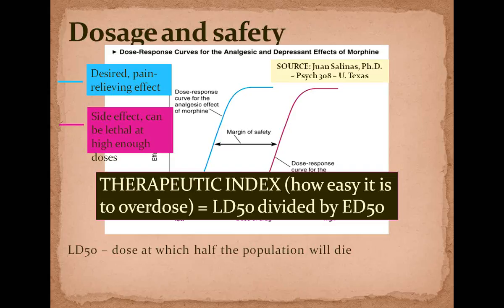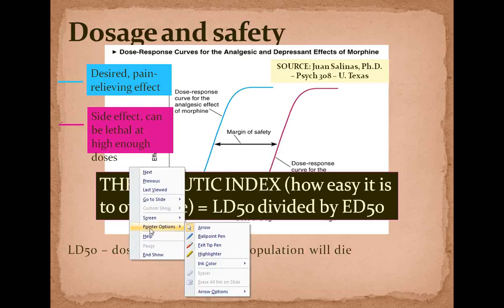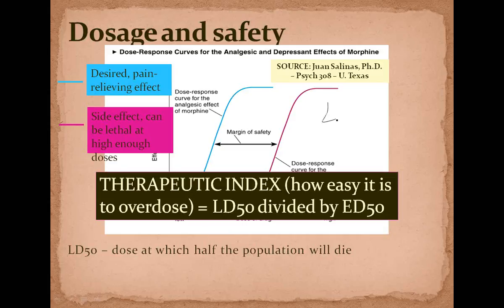The therapeutic index is how easy it is to overdose. The LD50 divided by the ED50 is the therapeutic index. The lethal dose divided by the effective dose — the ED50 is the effective dose at which half of the people will see the intended effect. You take those two numbers, divide them, and you end up with a ratio — the therapeutic index — and that gives you your safety margin and tells you how dangerous the drug actually is.